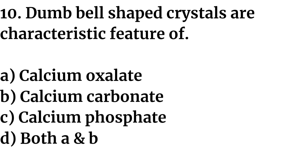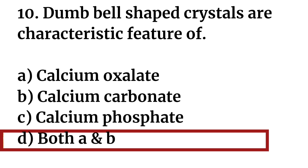Question number ten: Dumbbell-shaped crystals are a characteristic feature of — Option A: calcium oxalate. Option B: calcium carbonate. Option C: calcium phosphate. Option D: both A and B. The right answer is Option D: both A and B. Calcium oxalate is dumbbell-shaped, and calcium carbonate is also seen as dumbbell-shaped.